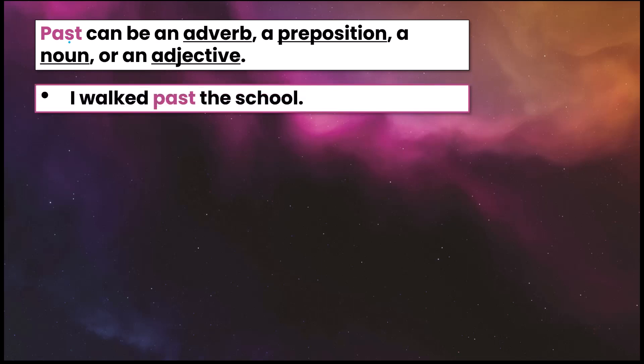For example, I walked past the school. So we have the verb walked and the word past is talking about the relationship between where I am and the school is. So imagine here's the school and here's me. I'm going to walk past the school. So now I'm here but the verb is walked. It's not past.